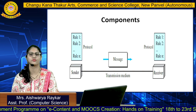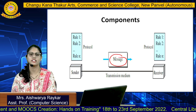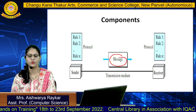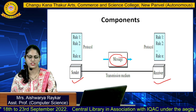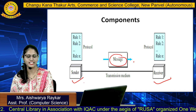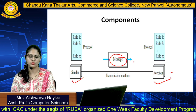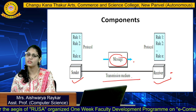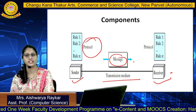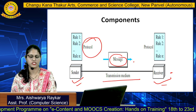Now let's have a look at the components of data communication. There are five components. The first is message — a message can be anything: text, number, audio, video. After that is sender and receiver. The sender sends the message to the receiver; the sender is who produces the data and the receiver is who receives it. The sender sends data to the receiver through the transmission medium, which can be either wired or wireless. And here protocol plays a vital role — protocol is a set of rules that must be followed by the sender and receiver.